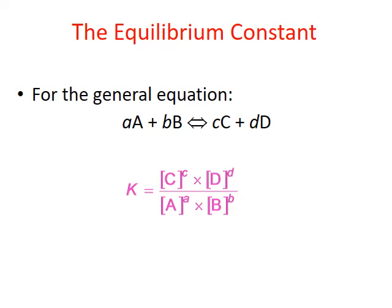We can calculate this equilibrium constant, known as capital K, using the equilibrium expression, which is the ratio of our concentration of our products — in this case C and D — divided by the concentrations of our reactants — in this case A and B. Each of the concentrations of our products and reactants are raised to the power of their coefficients from the balanced chemical equation.